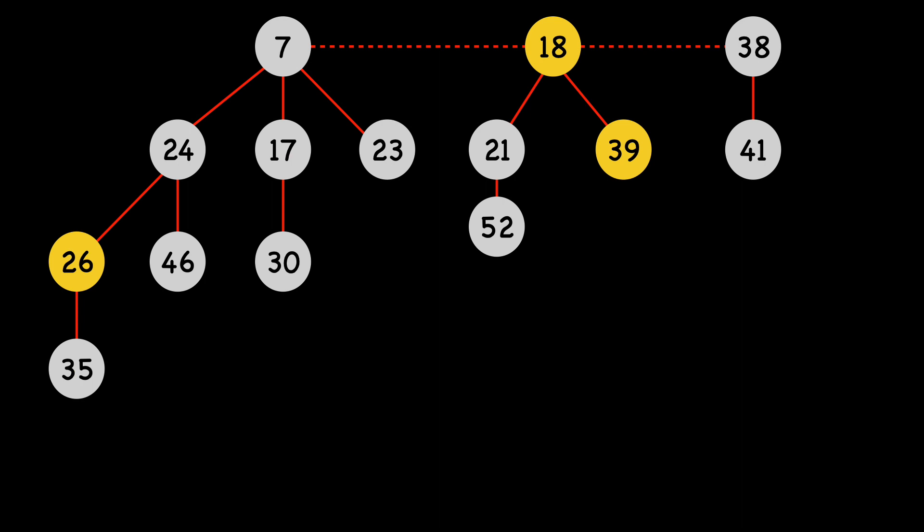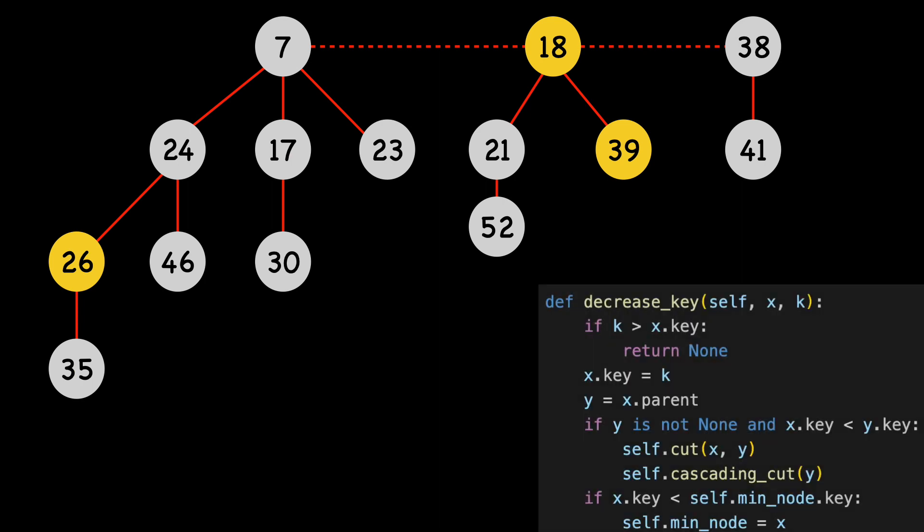I'll clear some real estate to make room for the code. We're going to decrease the key of node 46 to 15. I'll color node 46 blue. This node is X in our code. To start, we immediately skip the first if condition, as 15 is less than 46.